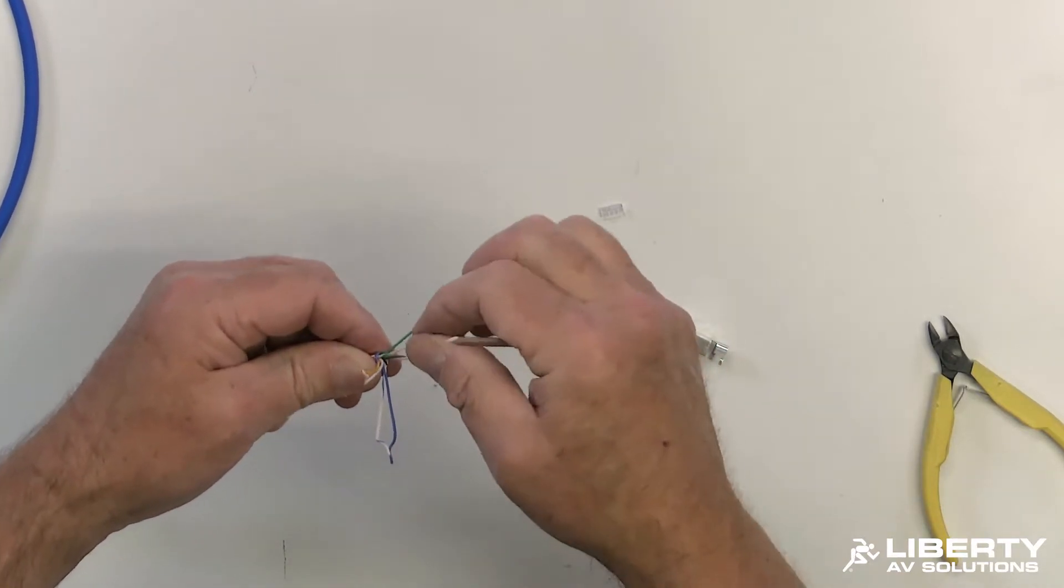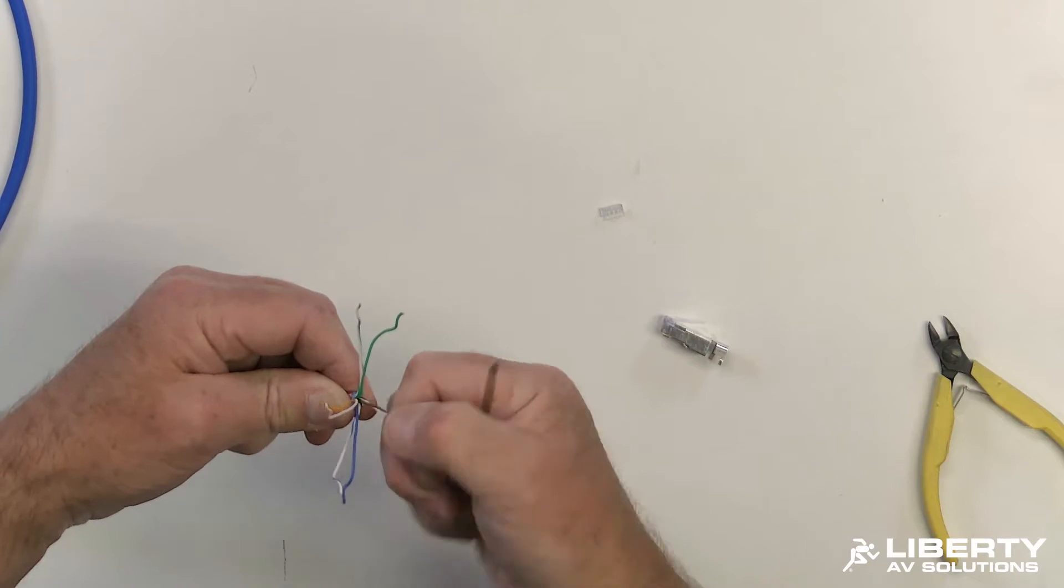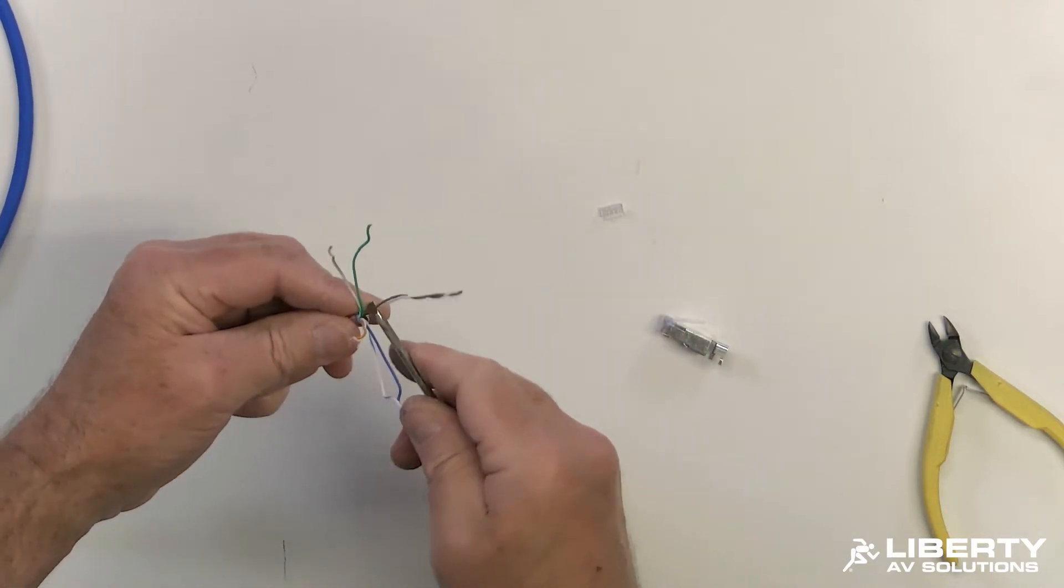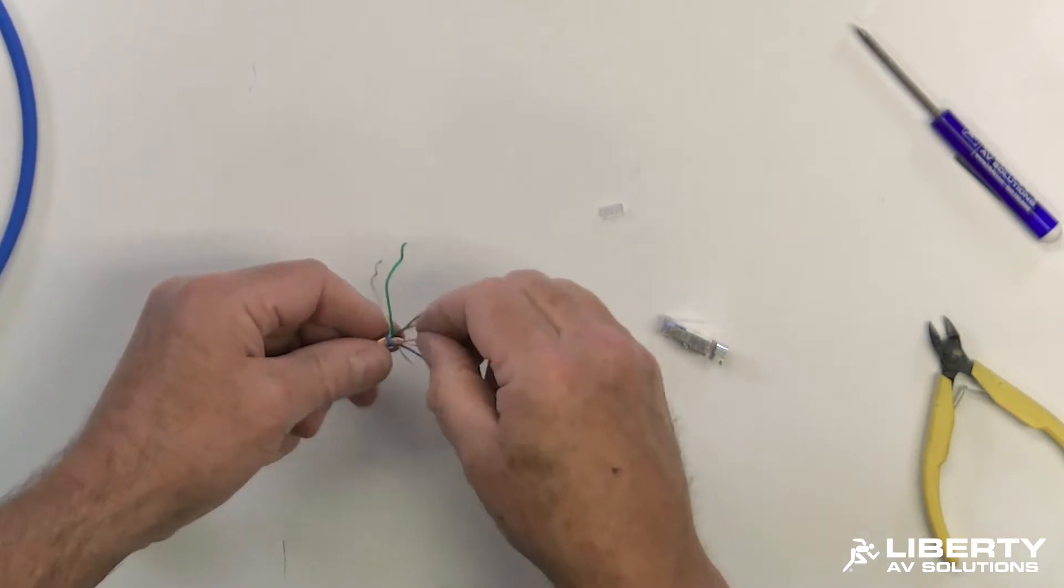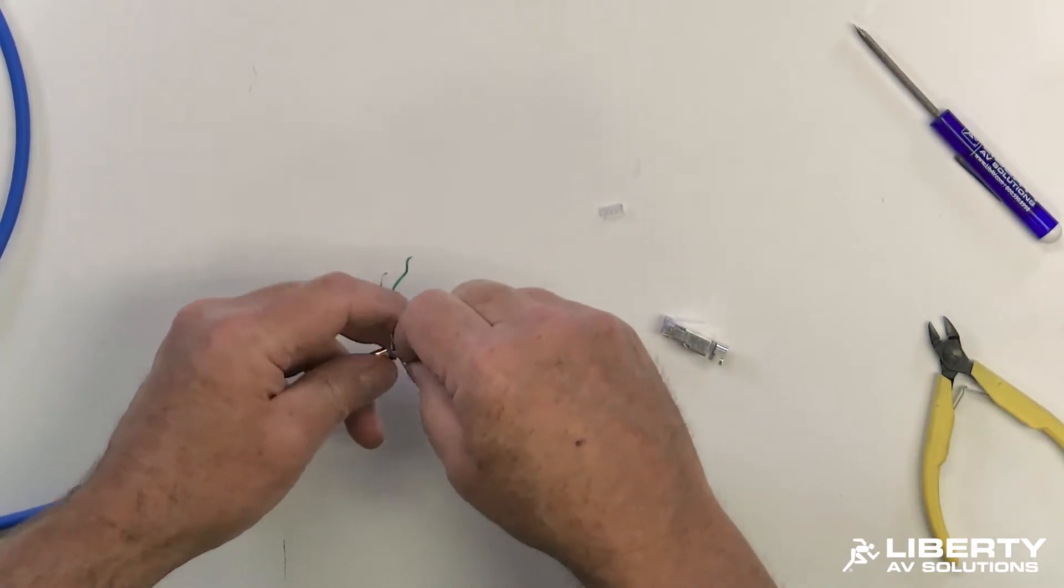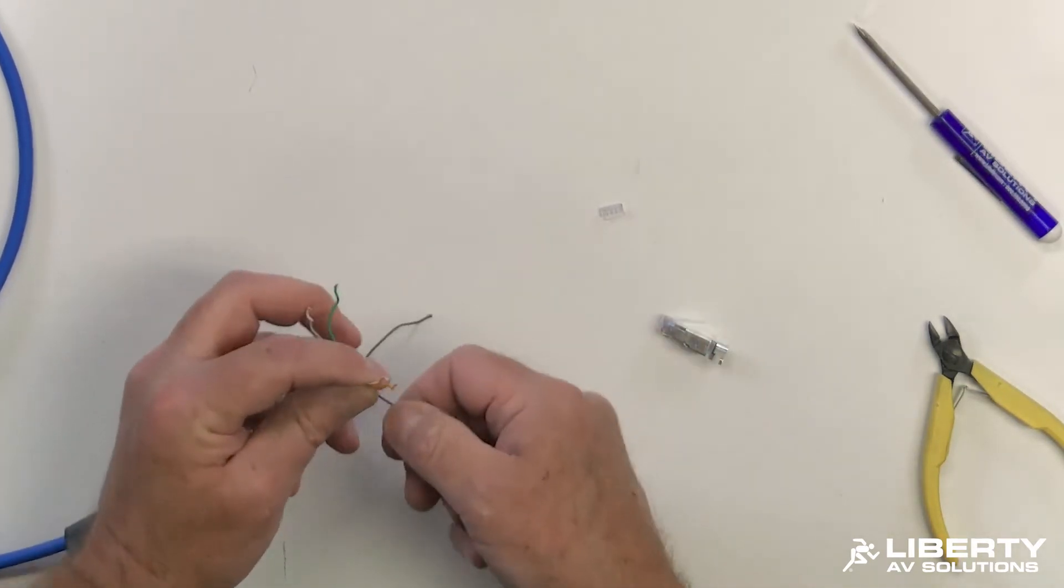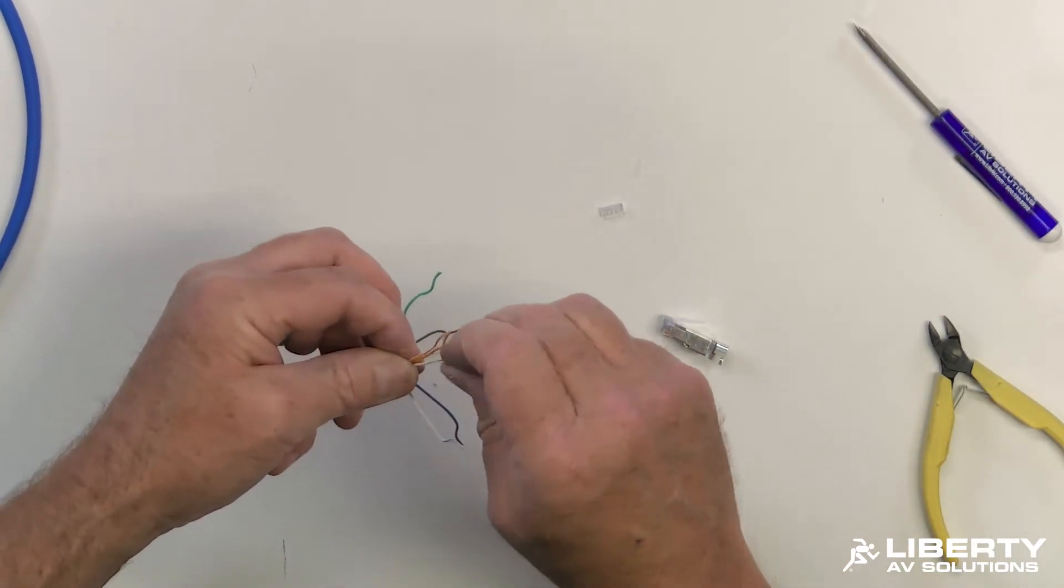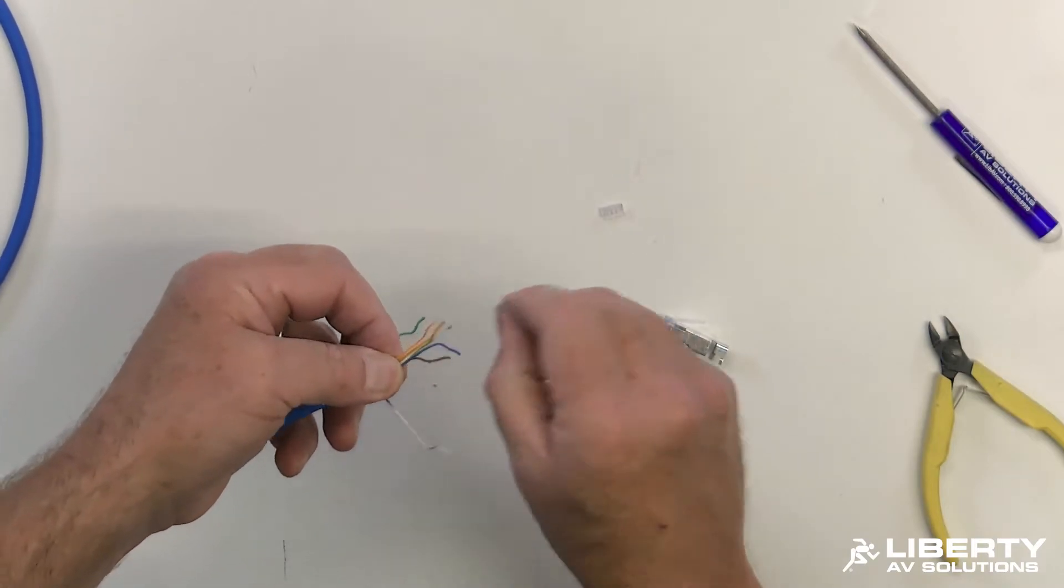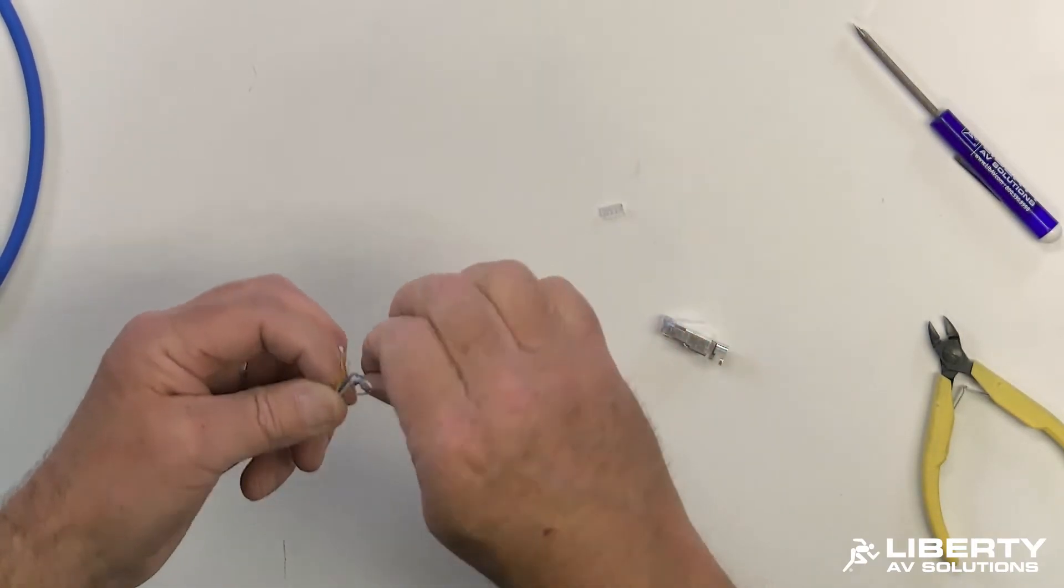Go ahead and just go down and untwist all four pairs. Don't want to pull too tight or else you could actually damage the insulation. Alright, so I've got all my pairs separated. I'm going to put these in the appropriate color code. We're going to do 568B because that is generally the industry standard for data type communications.